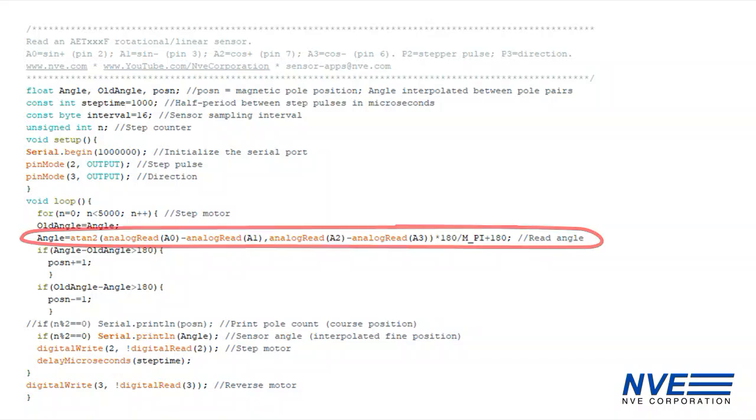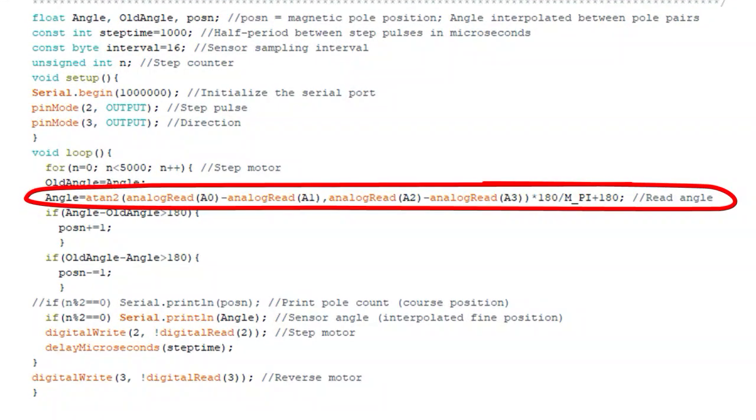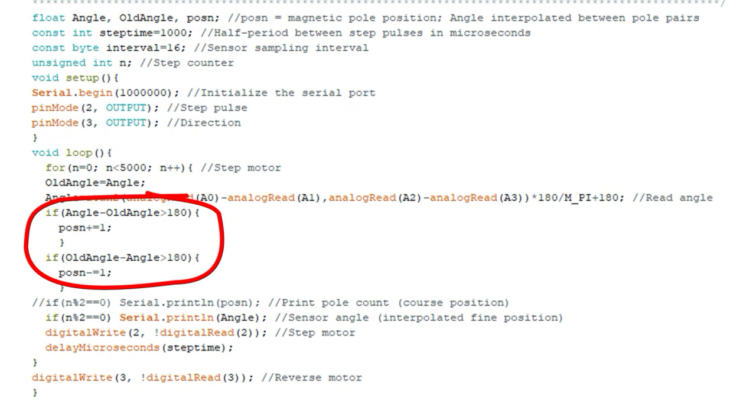We can read the sensor and calculate the position with a single line of code. We detect the magnetic pole at the zero to 360 degree transitions.